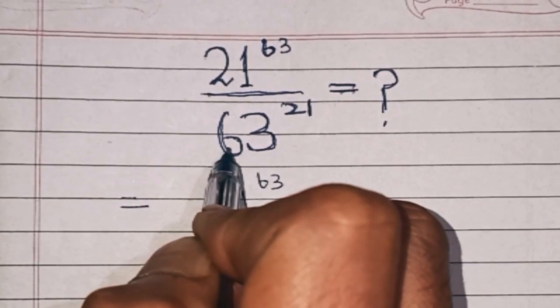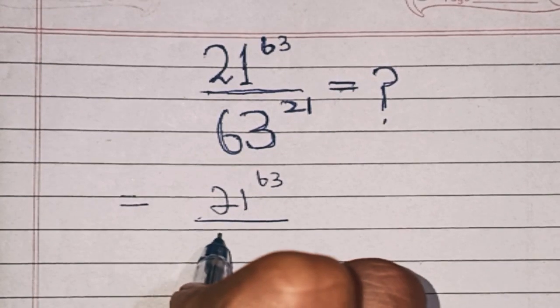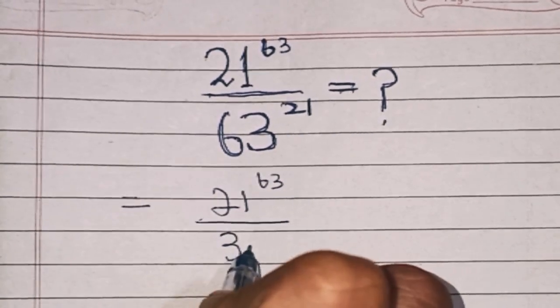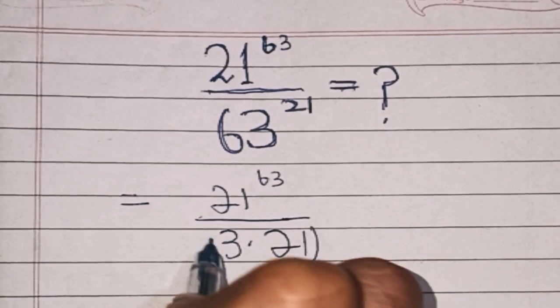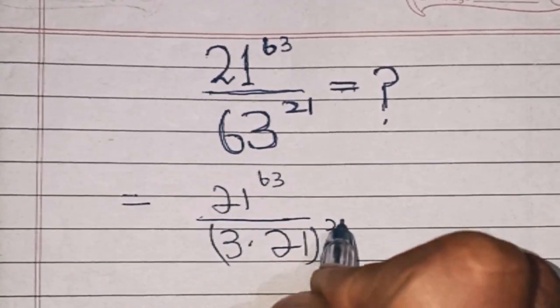over, this 63 can be split as three times three times 21, then bracket power 21.